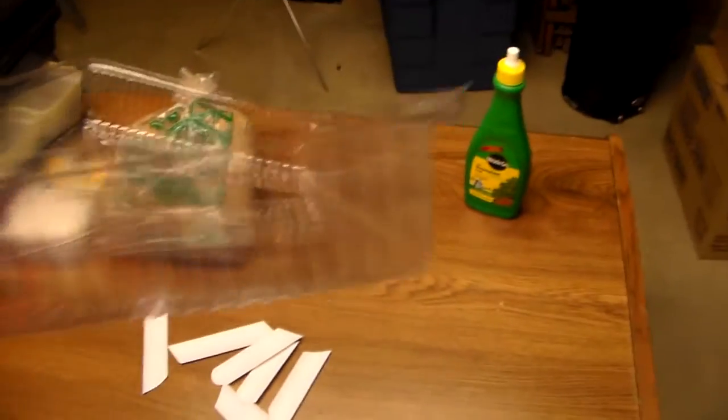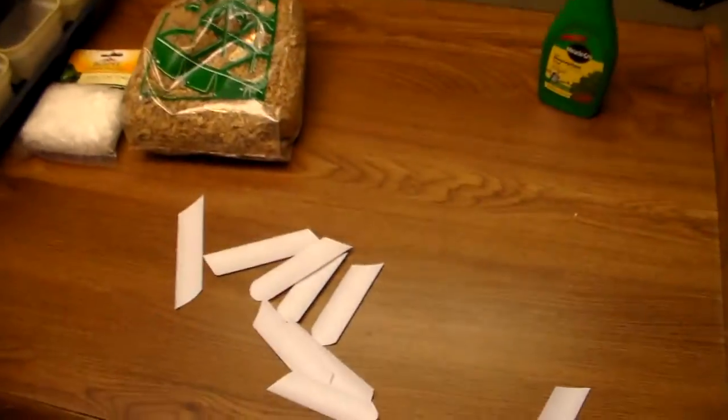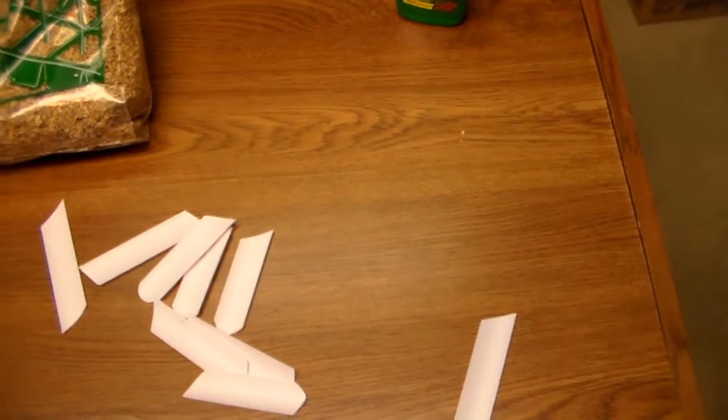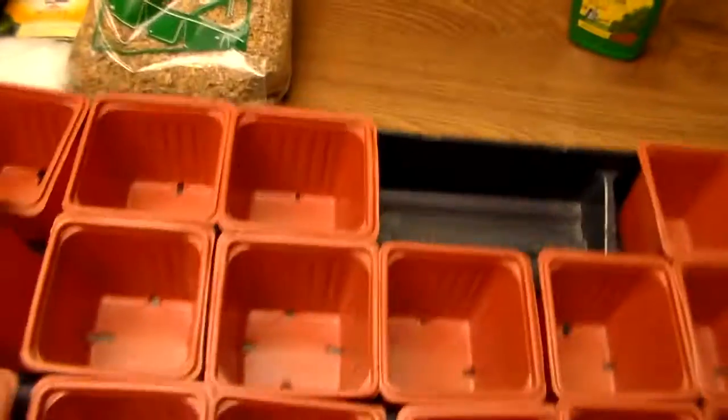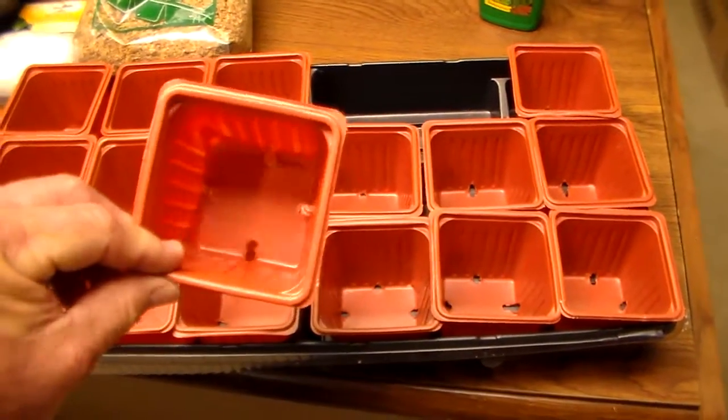And we've also got the humidity domes, which you can find at Walmart. Preferably, if you have a garden center in your area, you'd probably want to use the garden center. But this is the Walmart $5 to $6 tray, and they're nice pots. They're not bad.